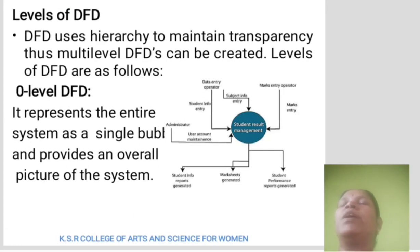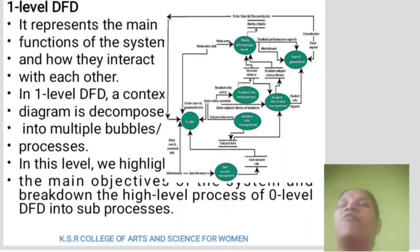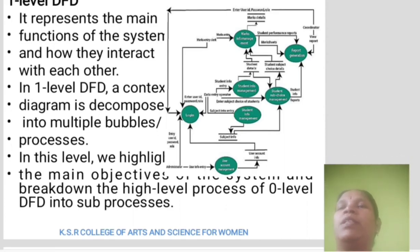Levels of DFD: DFD uses hierarchy to maintain transparency, and multi-level DFDs can be created. Zero level represents the entire system as a single bubble and provides an overall picture of the system. One level DFD represents the main functions of the system and how they interact with each other. In the one-level DFD, the context diagram is decomposed into multiple bubbles or processes, highlighting the main objectives broken down from the zero-level DFD into sub-processes.